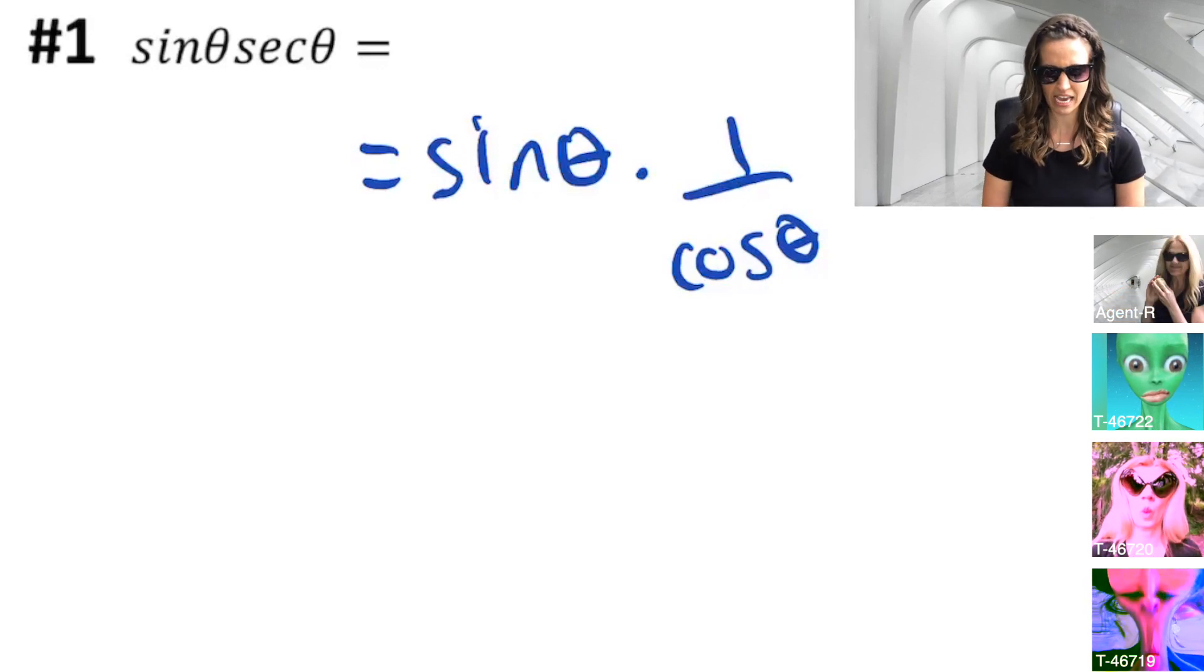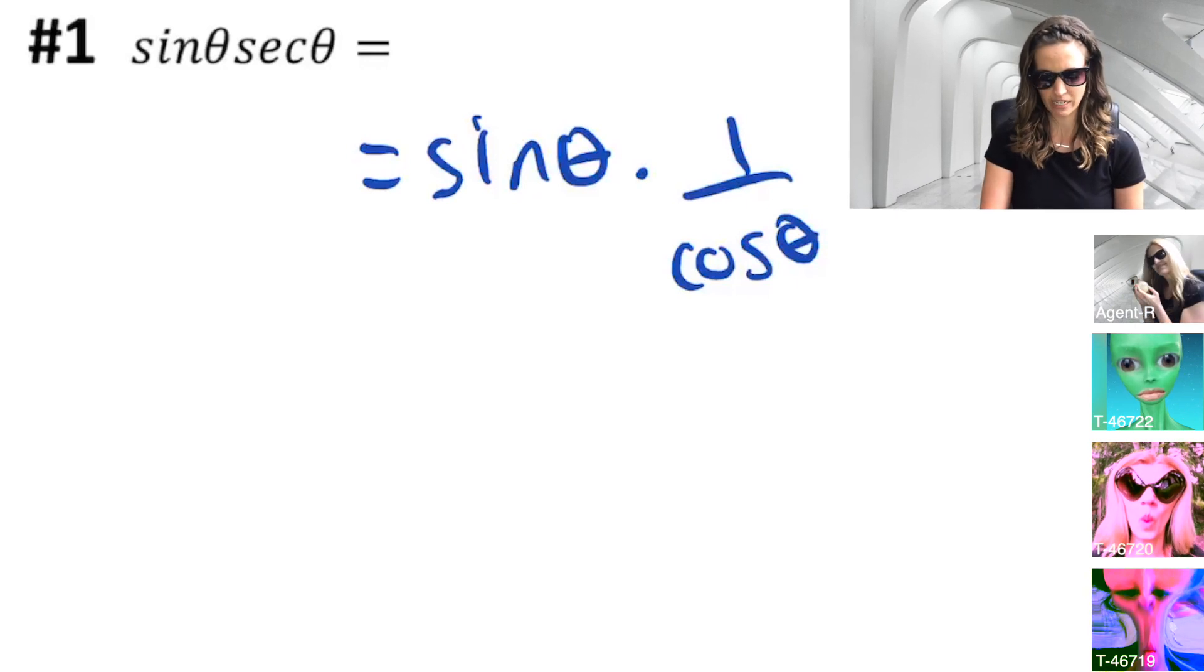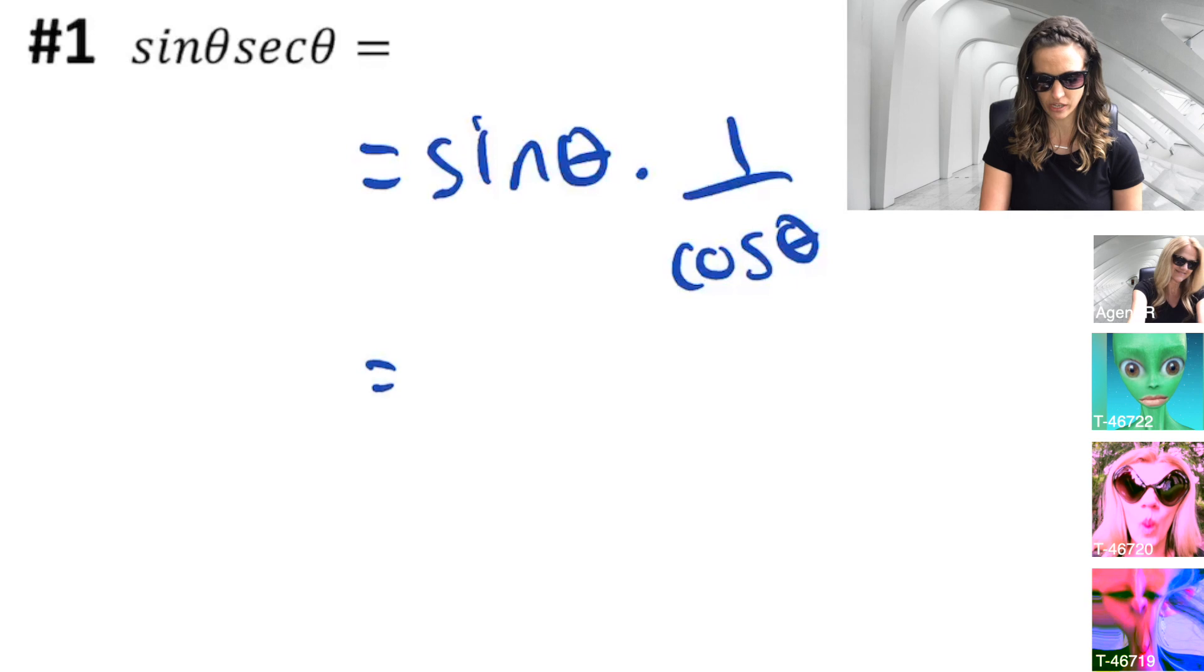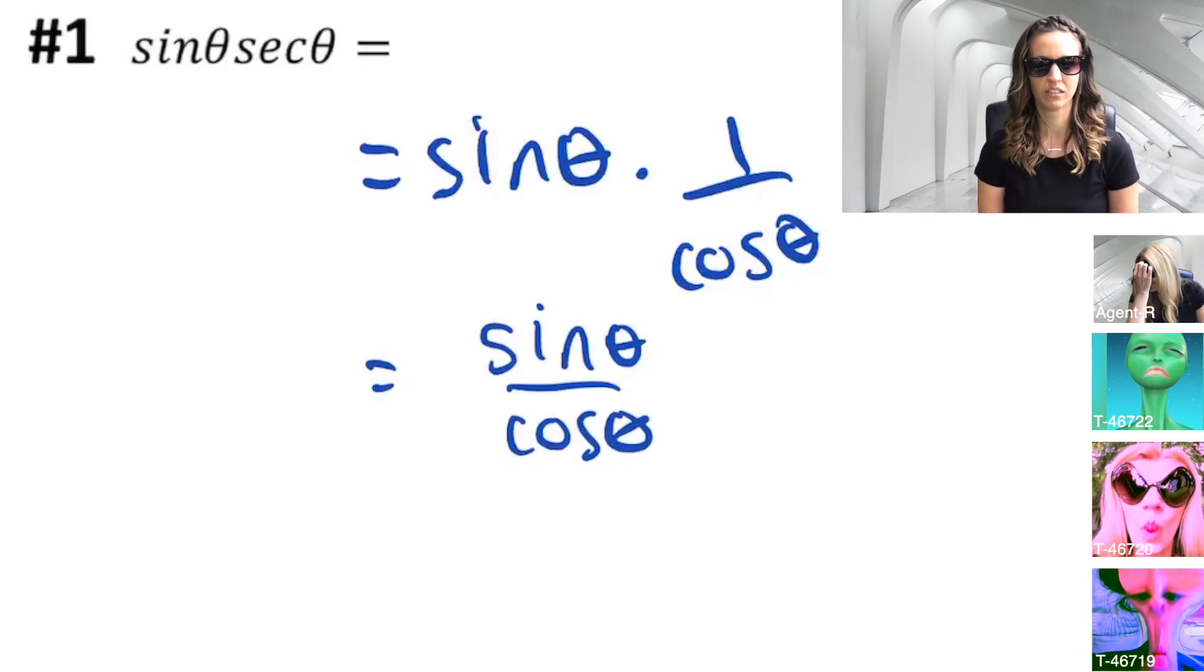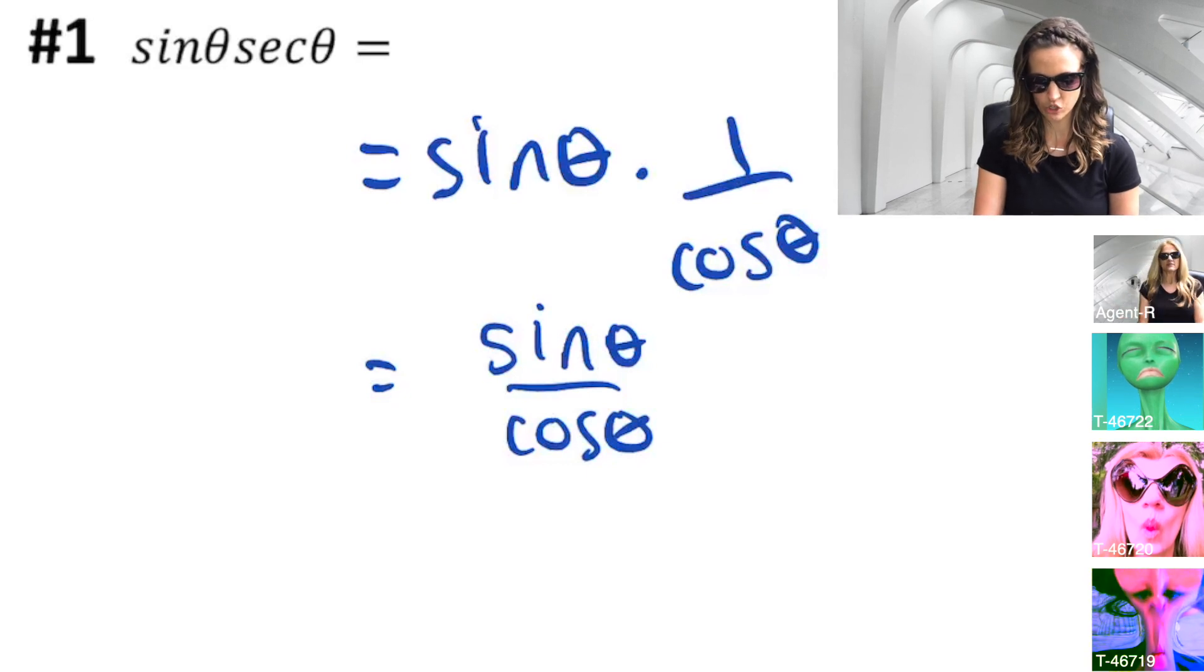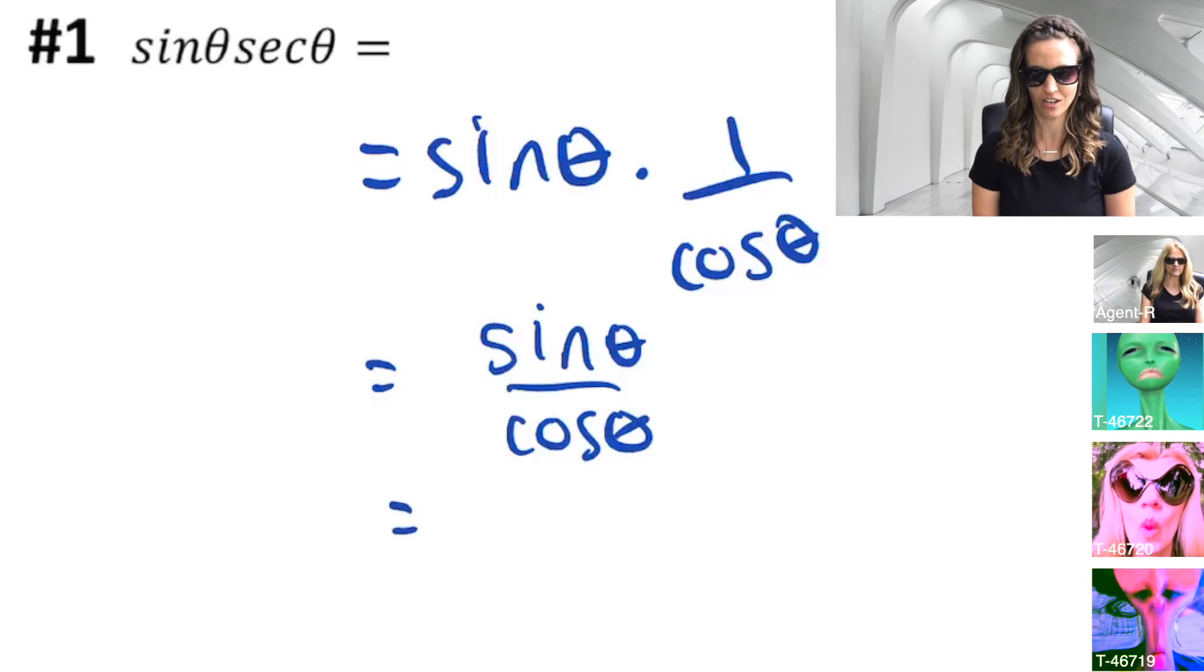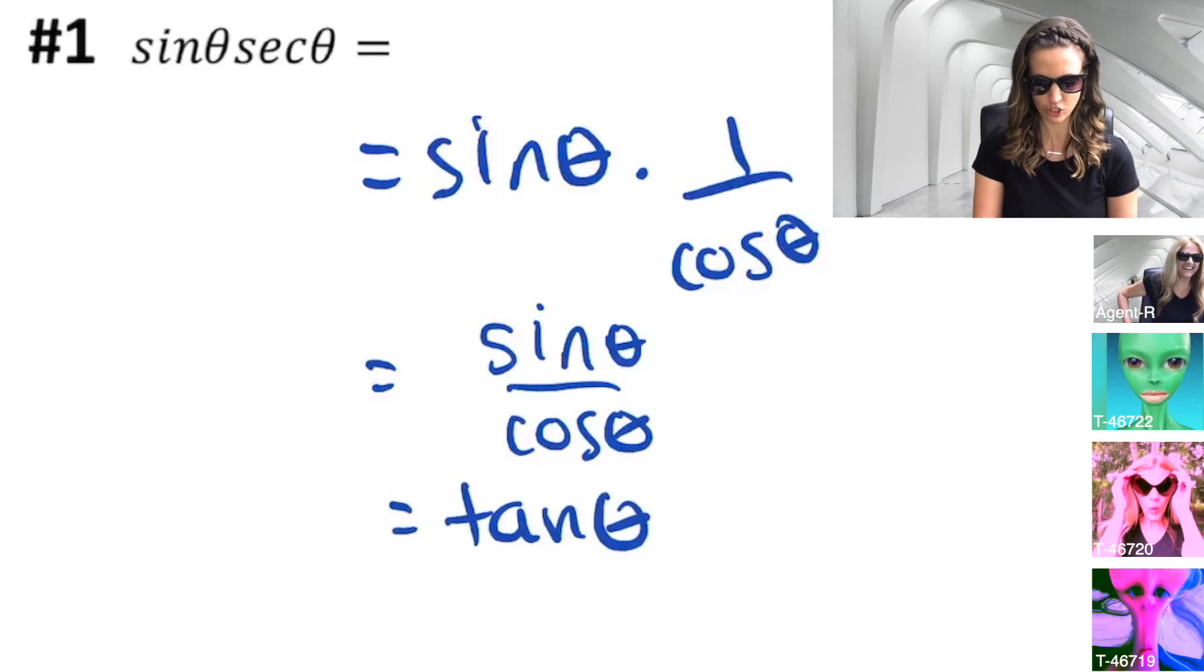Now, I have sine theta times one over cosine theta. That can be rewritten as sine theta over cosine theta. Sine theta over cosine theta, that is tangent theta. So, we have discovered sine theta times secant theta is really tangent theta.